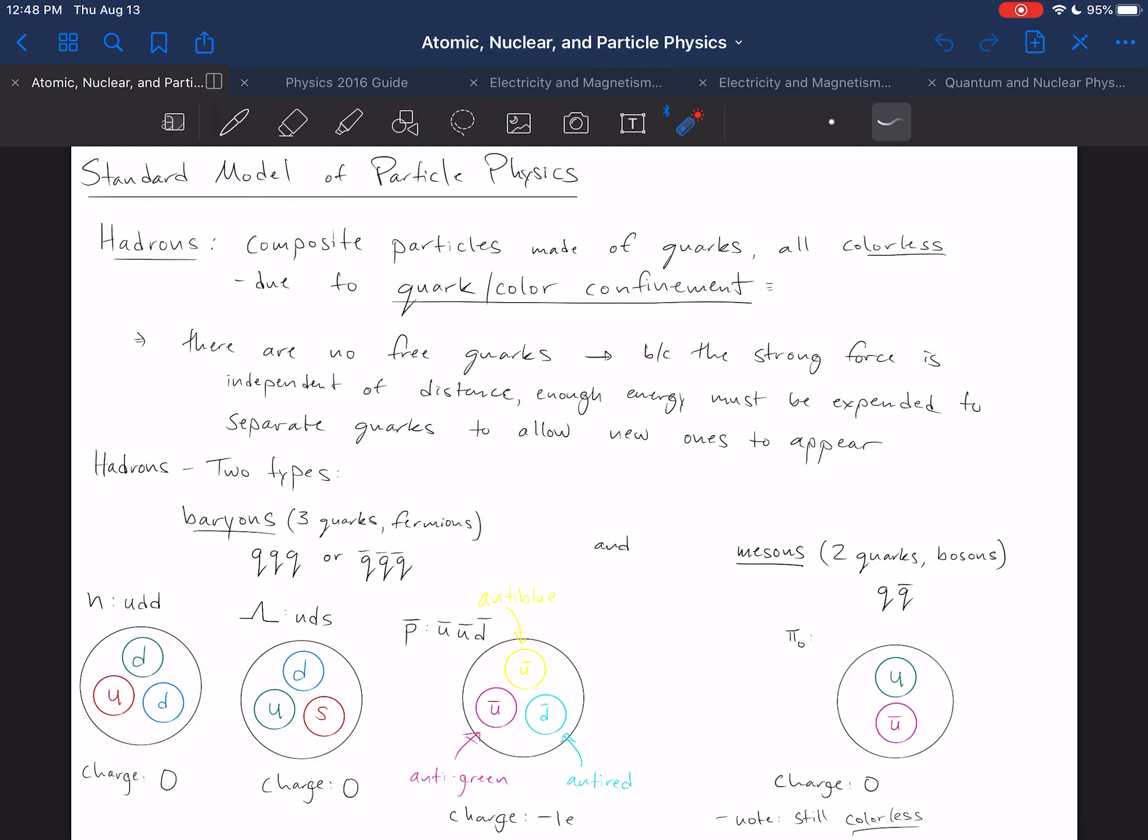Now there are a whole bunch of other baryons composed of different combinations of those quarks. So for example, this lambda particle here is an up, down, strange, also with charge zero. This antiproton that we saw in the last slide would be another example of a baryon or antibaryon. And there are many baryons that exist, although by far the two most common are the neutron and the proton.